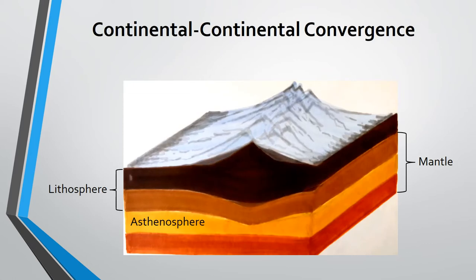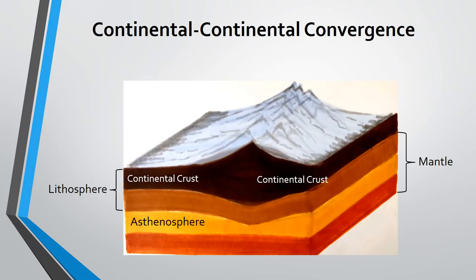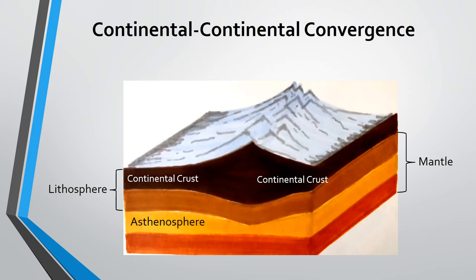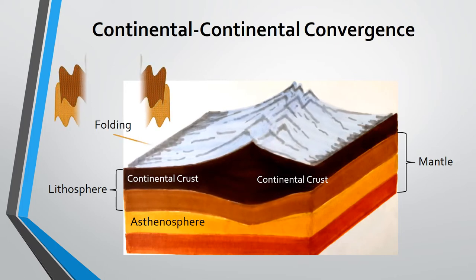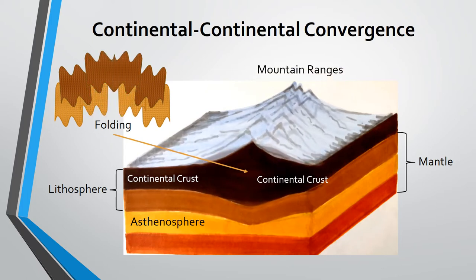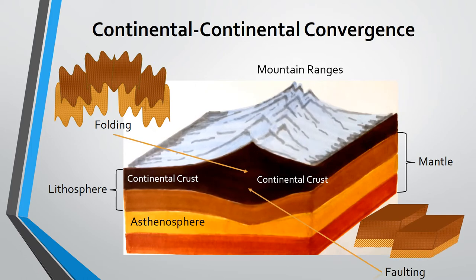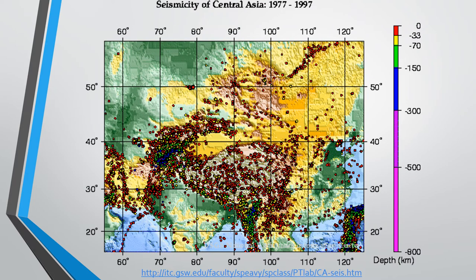The last type of converging plates is continental-continental convergence. This happens when two continental crusts collide toward each other. Since both of these lithospheric plates are thick and less dense, none of them subducts. Compressive forces cause these two plates to buckle and be pushed upward or sideways. Buckling of a rock layer is called folding, which causes the formation of great mountain ranges and mountain belts. As the continental plates continue to fold, crusts are deformed and faulting takes place. This is proven by the occurrence of earthquakes along this convergent boundary. This figure displays the seismicity of Central Asia from 1977 to 1997. Most of the recorded earthquake epicenters are colored red, indicating that these earthquakes' foci lie within a depth of 0 to 33 kilometers.